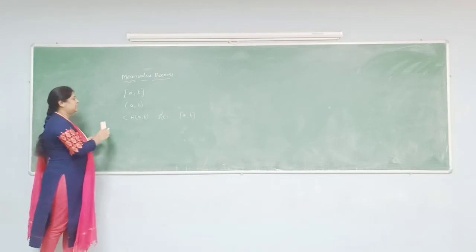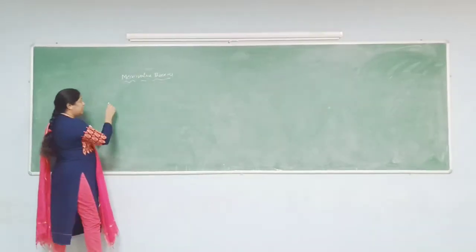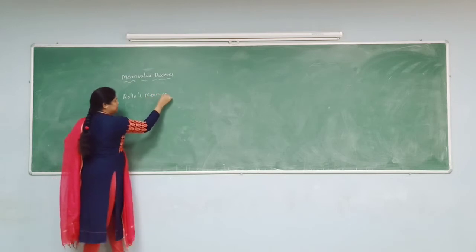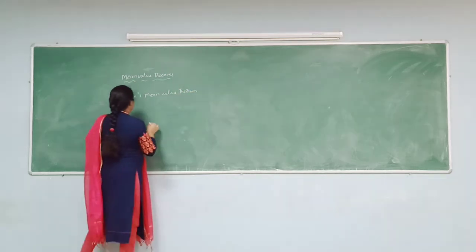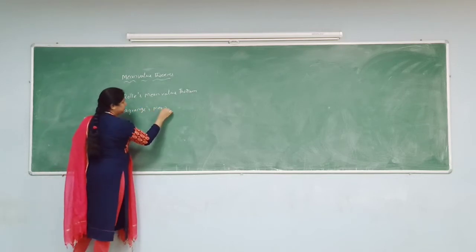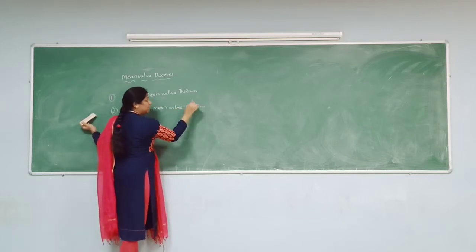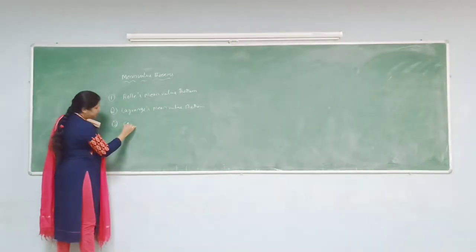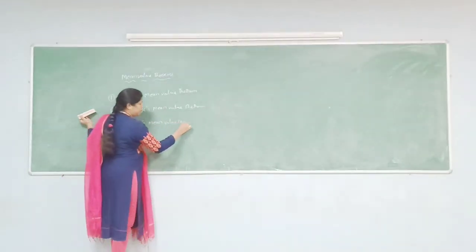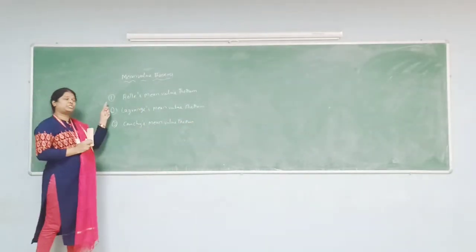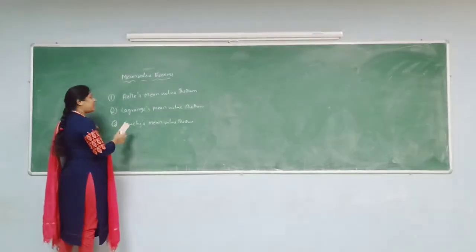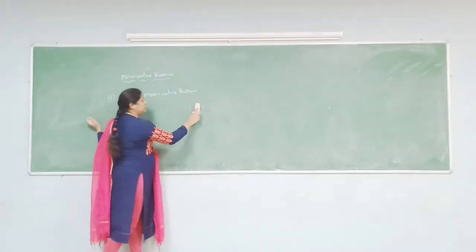We have three types of mean value theorems. The first one is Rolle's mean value theorem, and the second one is Lagrange's mean value theorem. Now I am going to discuss about Rolle's mean value theorem — what is the statement for the Rolle's mean value theorem?